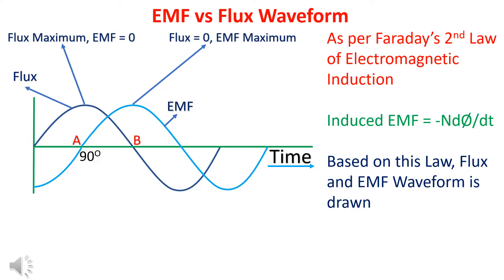At point A, flux is maximum, but dφ/dt is equal to zero. Hence, induced EMF is zero. At point B, flux is zero, but dφ/dt is maximum. Hence, EMF is maximum. Moreover, at point B, dφ/dt is negative. The minus sign in the law makes the EMF positive.